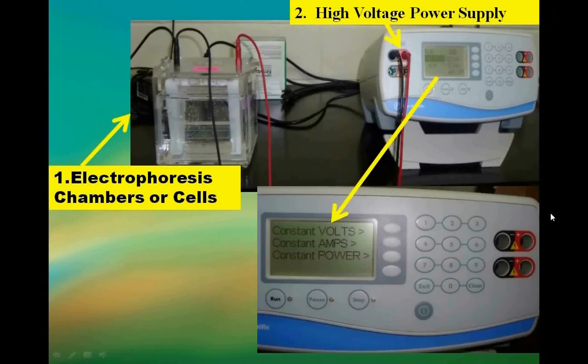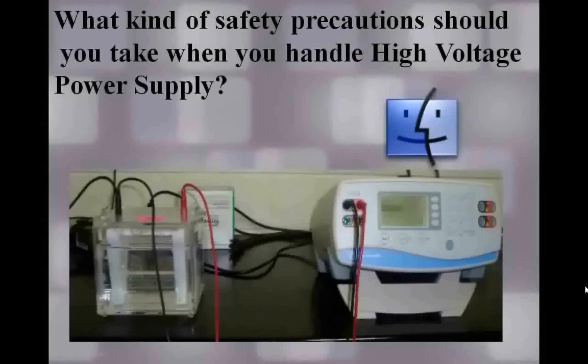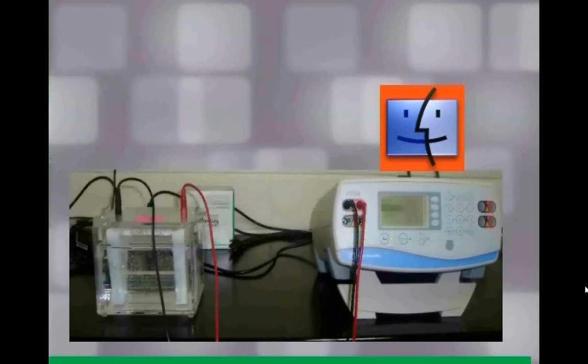Usually one to four sets of electrophoresis cells can be connected in parallel and run simultaneously. What kind of safety precautions should you take when you handle high voltage power supply? High voltage power supply generates dangerous levels of voltage and current during operation.